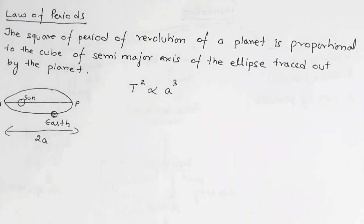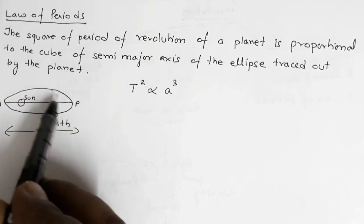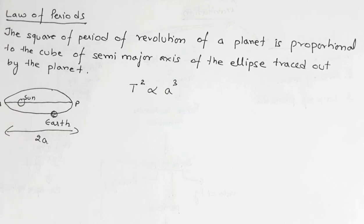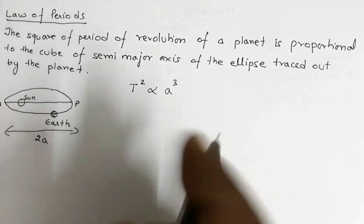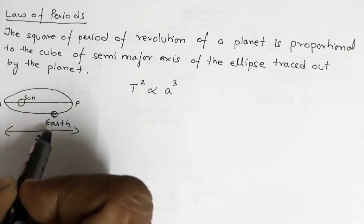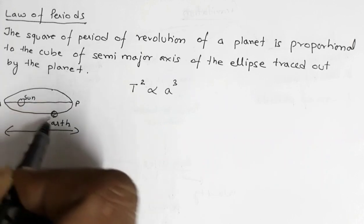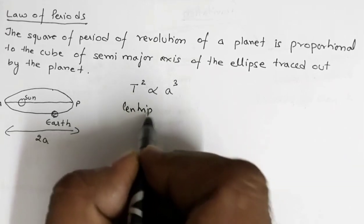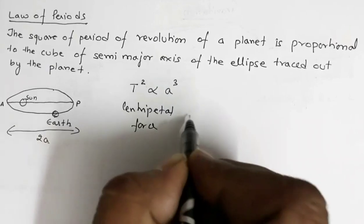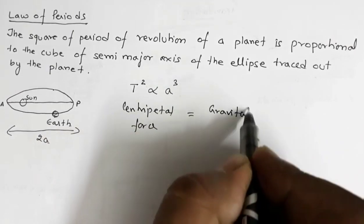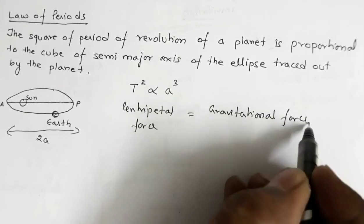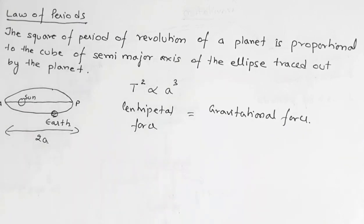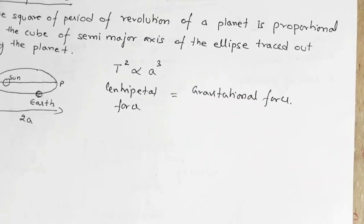Let us now analyze this law. When the planet is revolving around the sun, if we approximate this orbit to be a circular orbit, and since it is moving in a circular path, it is acted upon by a centripetal force. This centripetal force is provided by the gravitational force of the sun. We will be learning about Newton's law of gravitation in a later topic, but using previous knowledge I will write the expression for gravitational force directly.